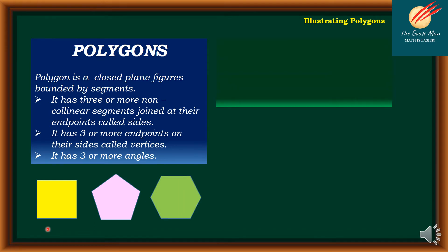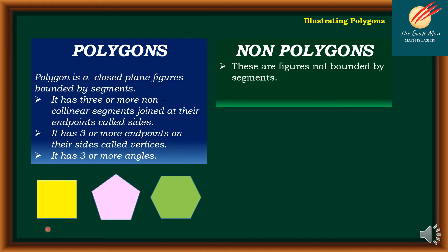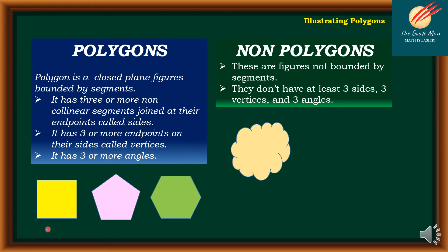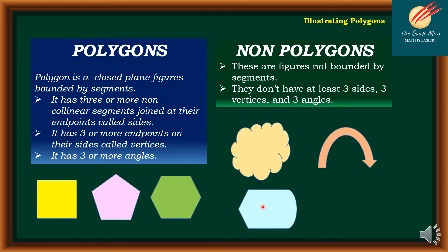On the other hand, non-polygons are figures not bounded by segments, and they don't have at least three sides, three vertices, and three angles. Examples include figures with curves — so a curve means it is not bounded by a segment — and figures not bounded by segments.